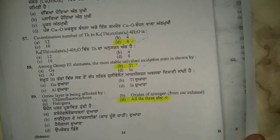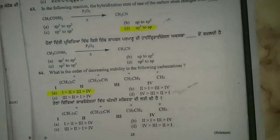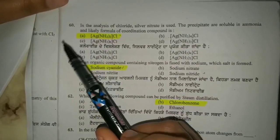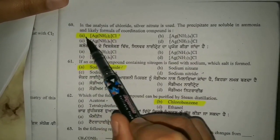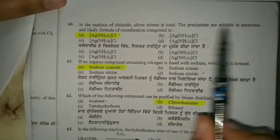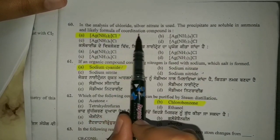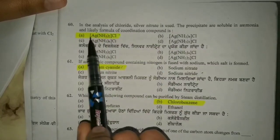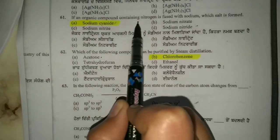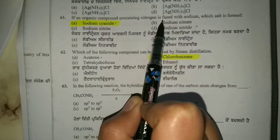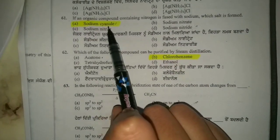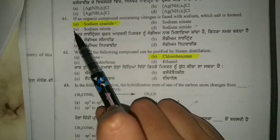Question 60: in the analysis of chloride, silver nitrate is used — the precipitate is soluble in ammonia — the formula of the coordination compound is option number A. Question 61: if an organic compound containing nitrogen is fused with sodium, which salt is formed? Sodium cyanide — option number A.